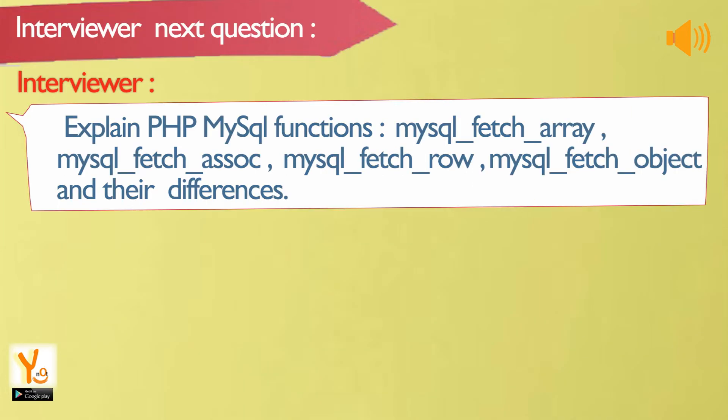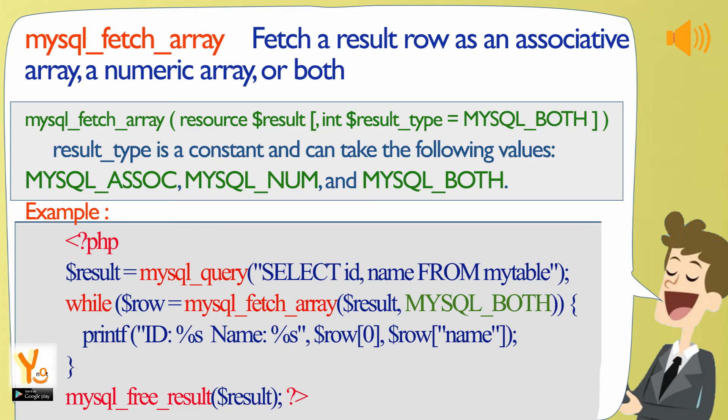Next question: explain PHP MySQL functions - mysql_fetch_array, mysql_fetch_assoc, mysql_fetch_row, mysql_fetch_object - and their differences. mysql_fetch_array fetches a result row as an associative array, a numeric array, or both.